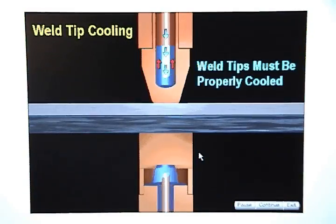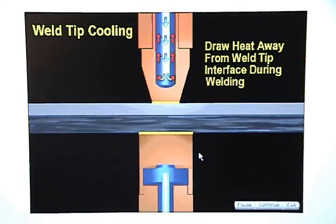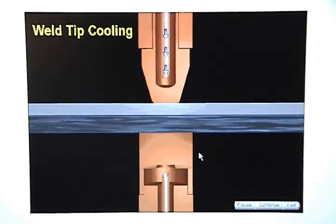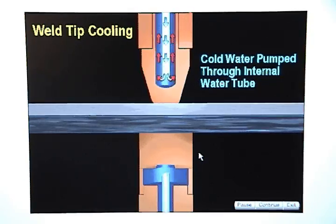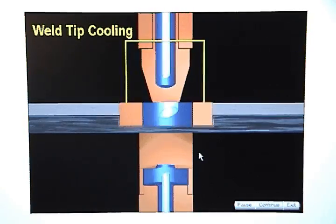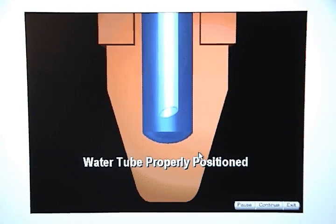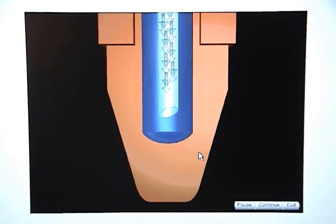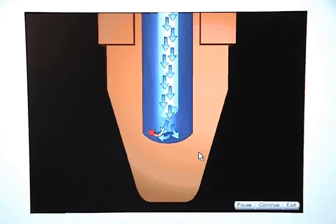Weld tips must be properly cooled so they can draw heat away from the weld tip interface during welding. Cooling is achieved by pumping cold water through a water tube positioned inside each weld tip. When the water tube is properly positioned, water will flow out, hit the weld tip, and drain down the outside of the tube.